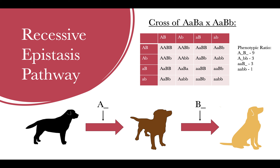Say we have two dogs, both of which are AaBb. These dogs would both be yellow labs because they are dominant for both loci. If these two were to have offspring, the Punnett square I made shows us the phenotypic ratio. In the single recessive epistasis pathway, it is easiest to count up all the squares that are recessive for the A locus. If you were to do that, you would see that there are four in the bottom right-hand corner of the table. These would all be black.